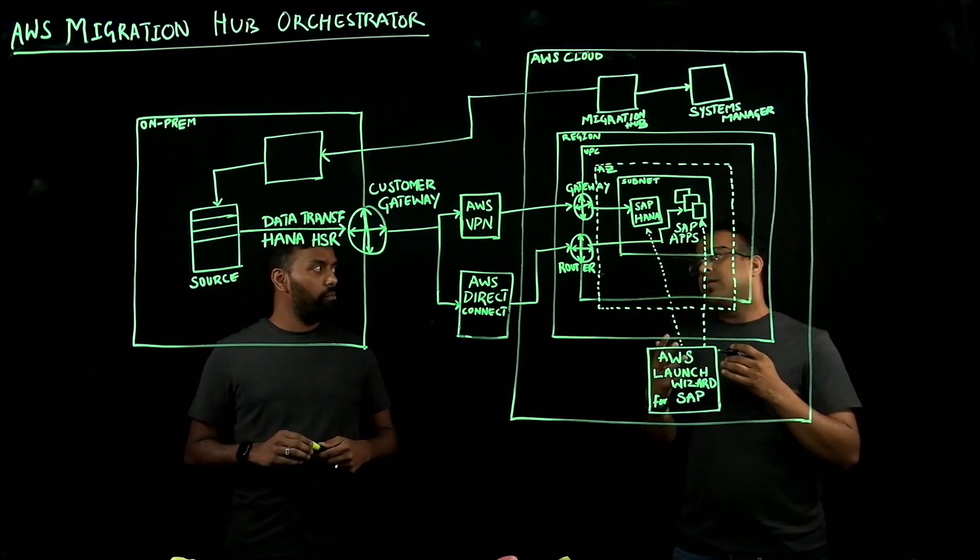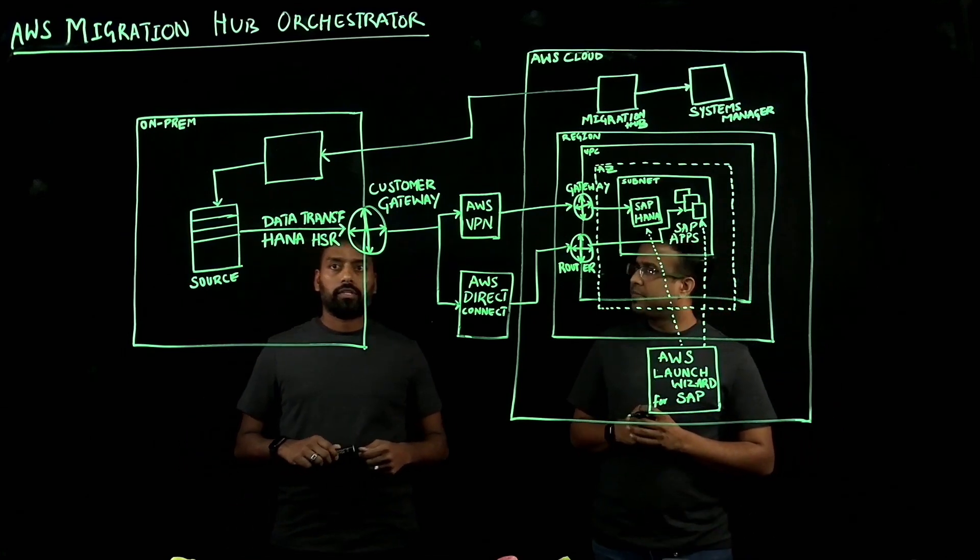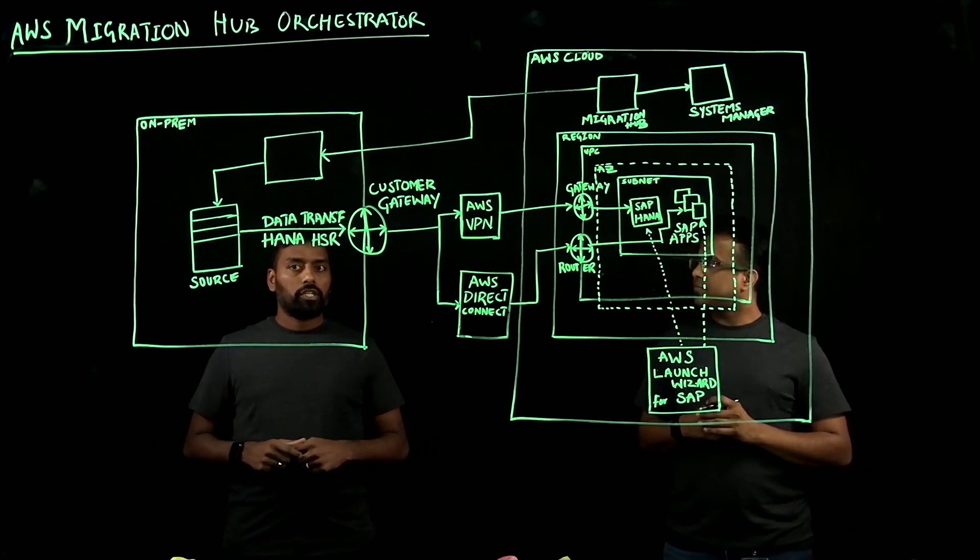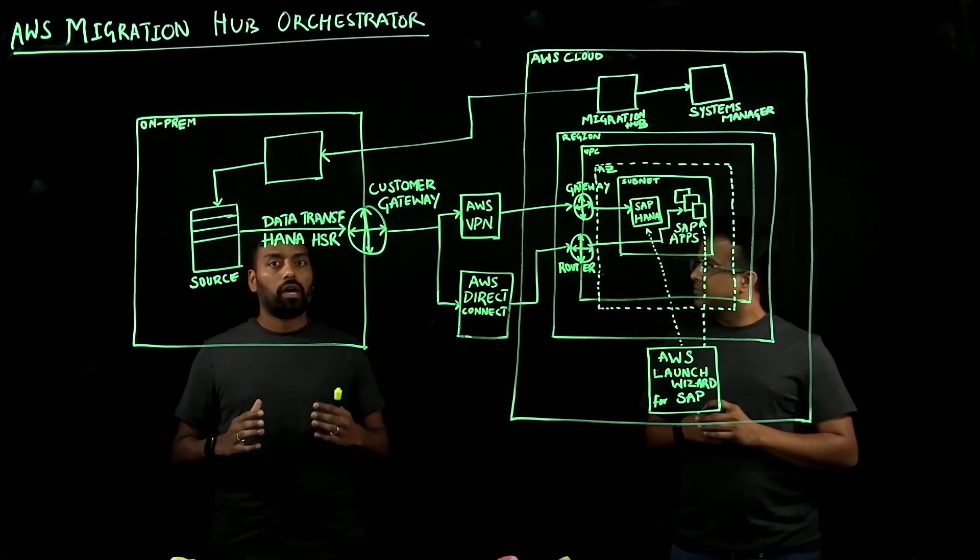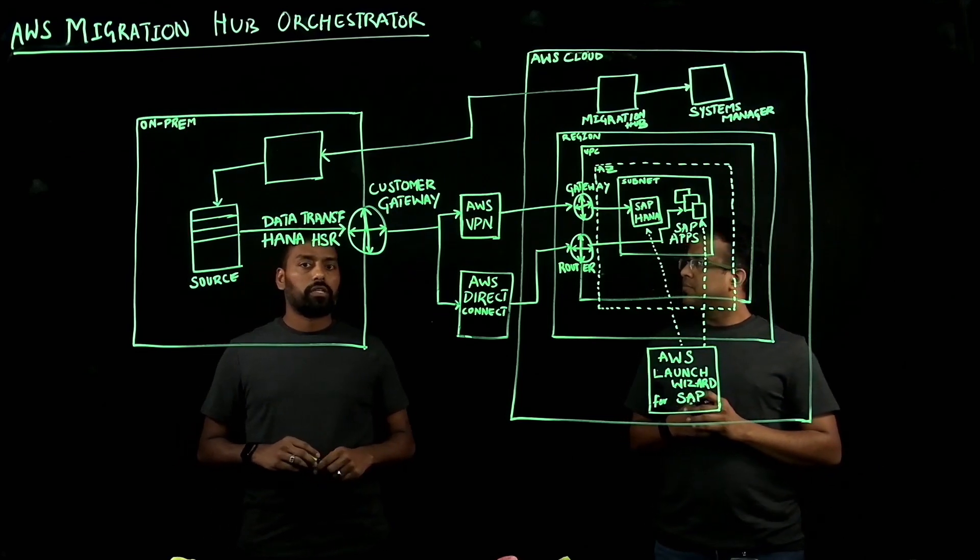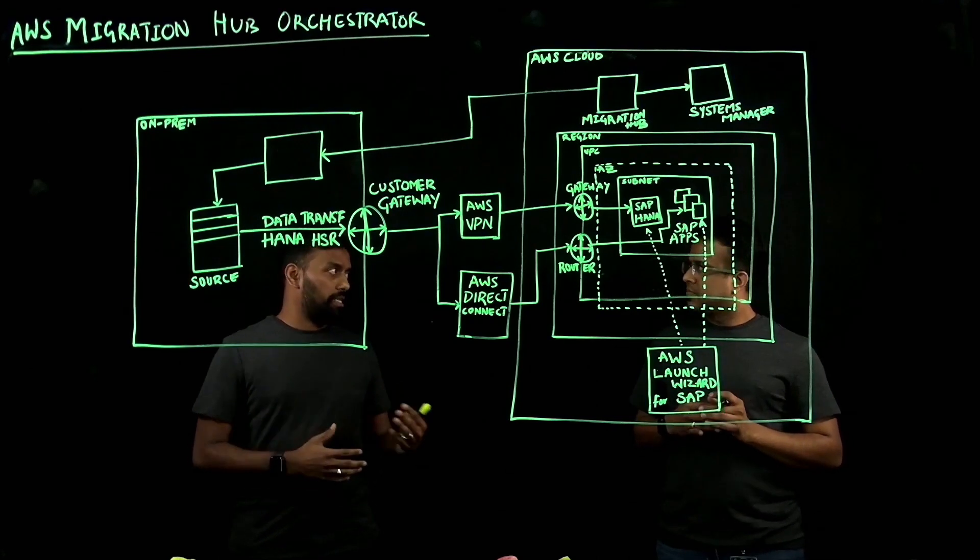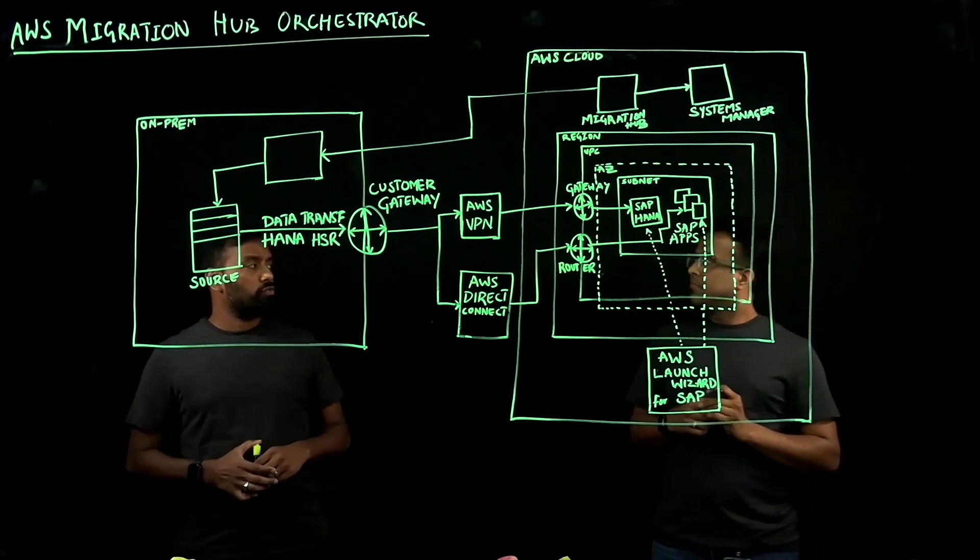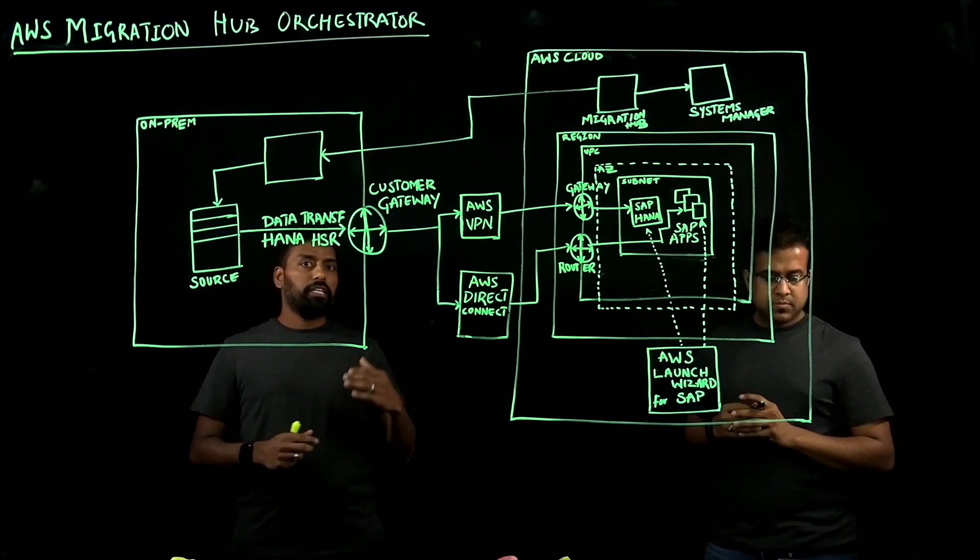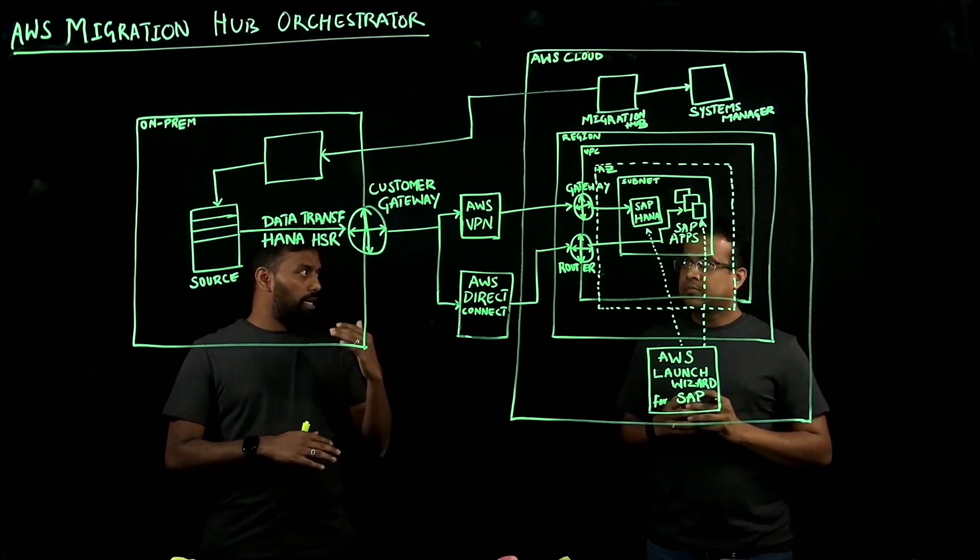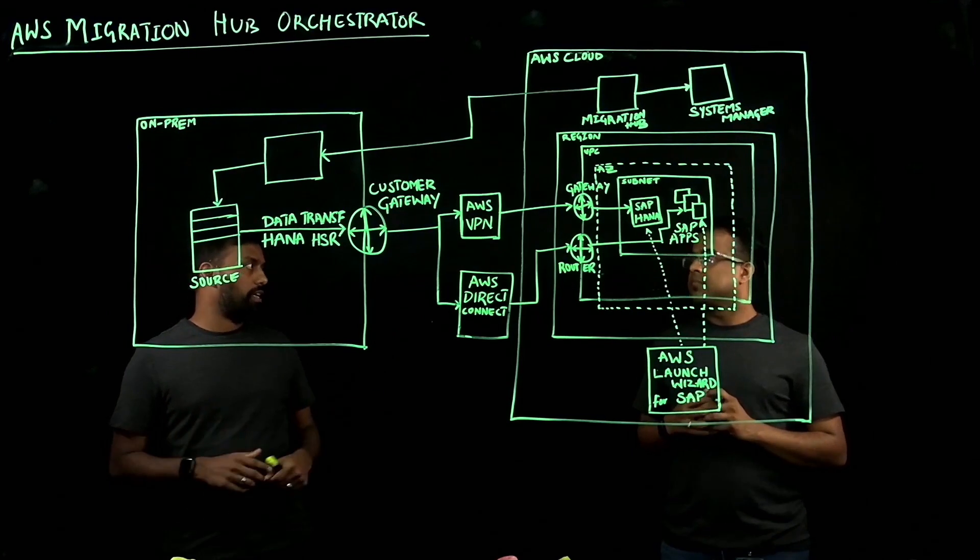So, what are different scenarios customers can use AWS Migration Hub Orchestrator? Absolutely. With Migration Hub Orchestrator, we can migrate SAP Netweaver-based applications which run on HANA databases. In addition to that, Migration Hub Orchestrator can also be used to migrate our custom applications as well. With this service, we offer two different templates. These templates are predefined sets of tasks that are defined based on our experience migrating several hundreds or thousands of customers.